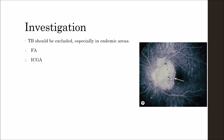Fluorescein angiography of active lesions shows hypofluorescence and late hyperfluorescence. The late phase shows hyperfluorescence of the area around the disc, with the arrow pointing towards it in the figure. Indocyanine green angiography of active lesions reveals marked hypofluorescence throughout all phases of the angiogram.